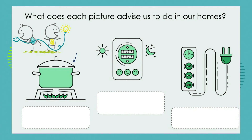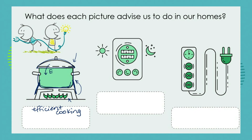Here we have a situation where we are cooking — it could be with gas or with electricity. So what can we do in order to be energy efficient with cooking? We need to make sure that wherever possible we use a lid, because the lid is going to trap our heat energy, and that means we will need less heat energy in order to cook the food. Also, we must look at the size of the hot plate and the size of our pot, and make sure that we are using a pot that matches the size of the hot plate so that we don't waste our heat energy.